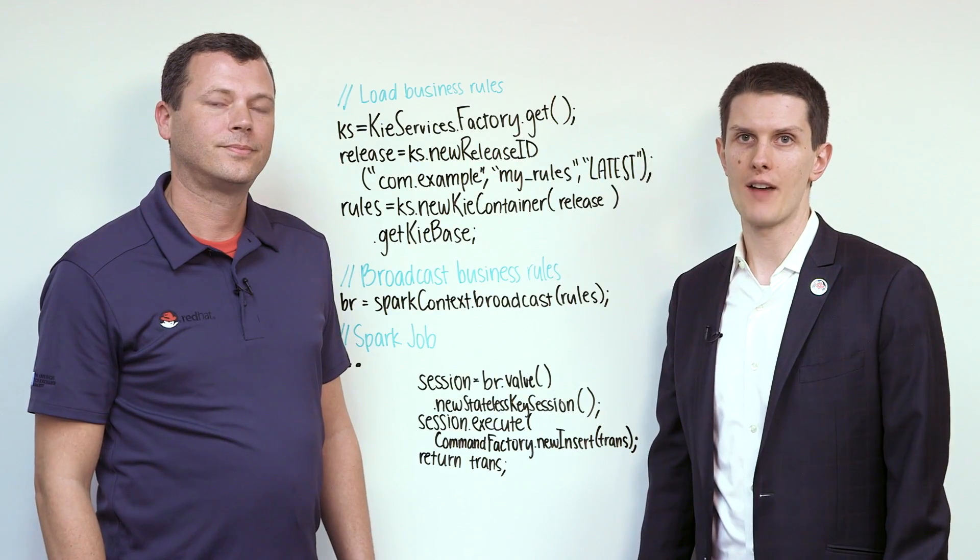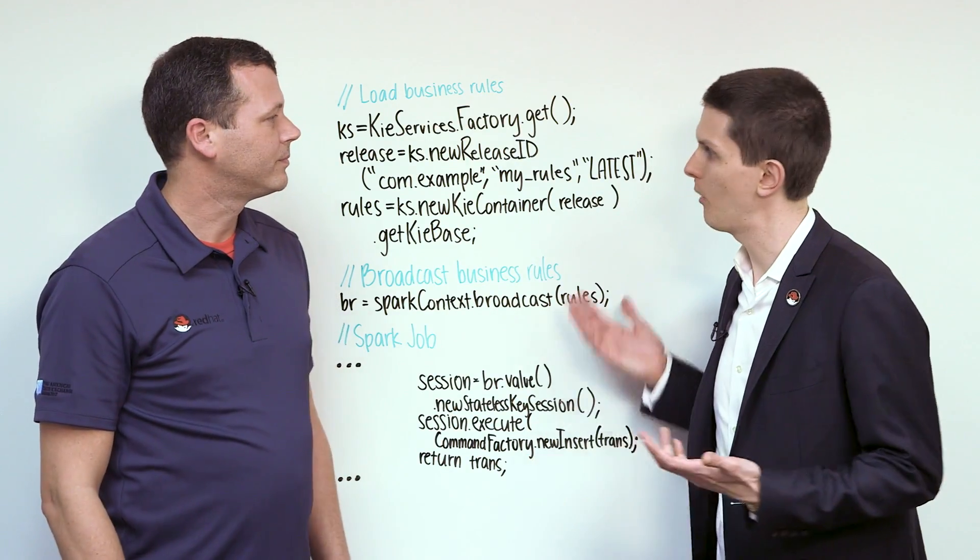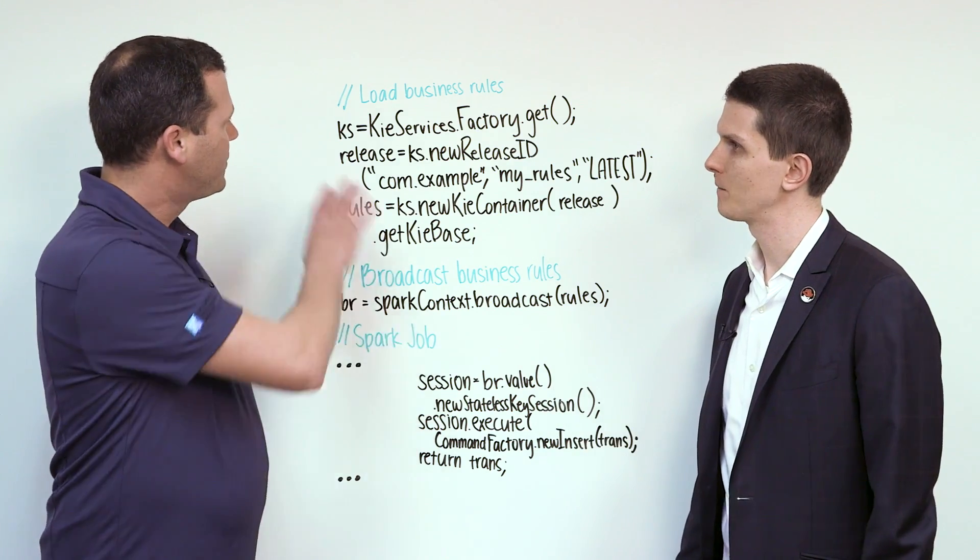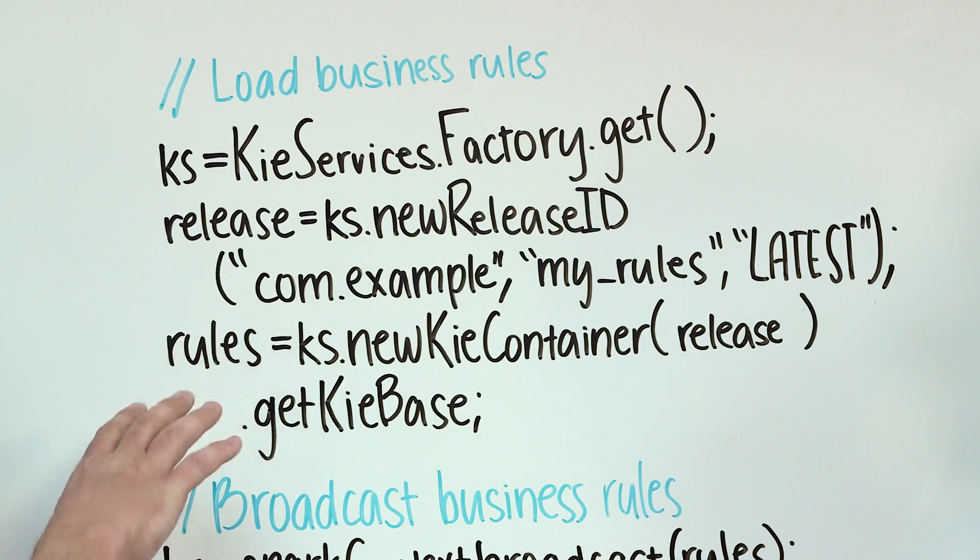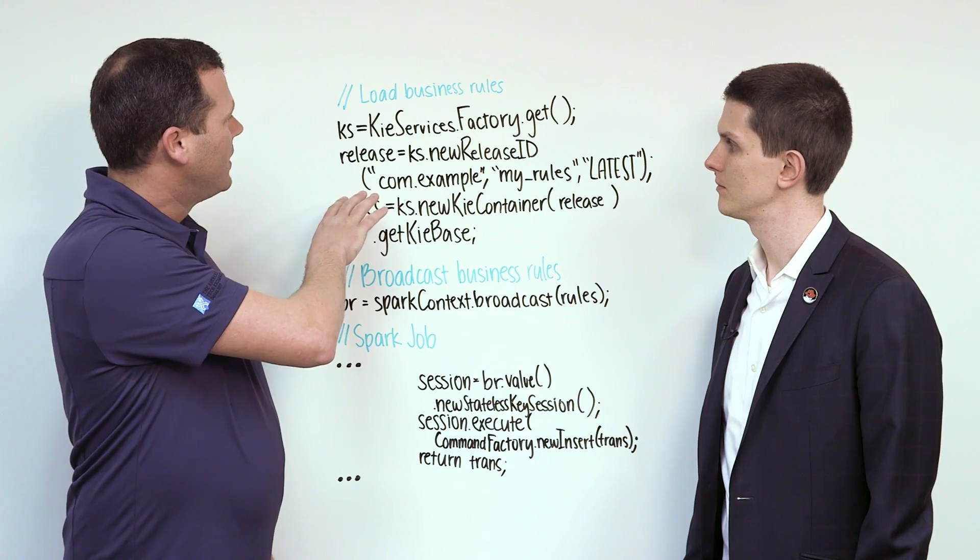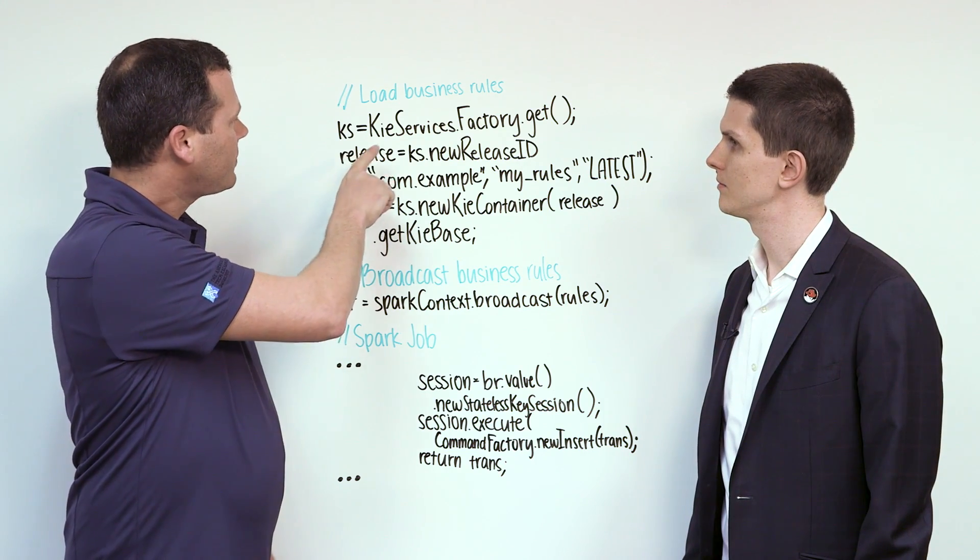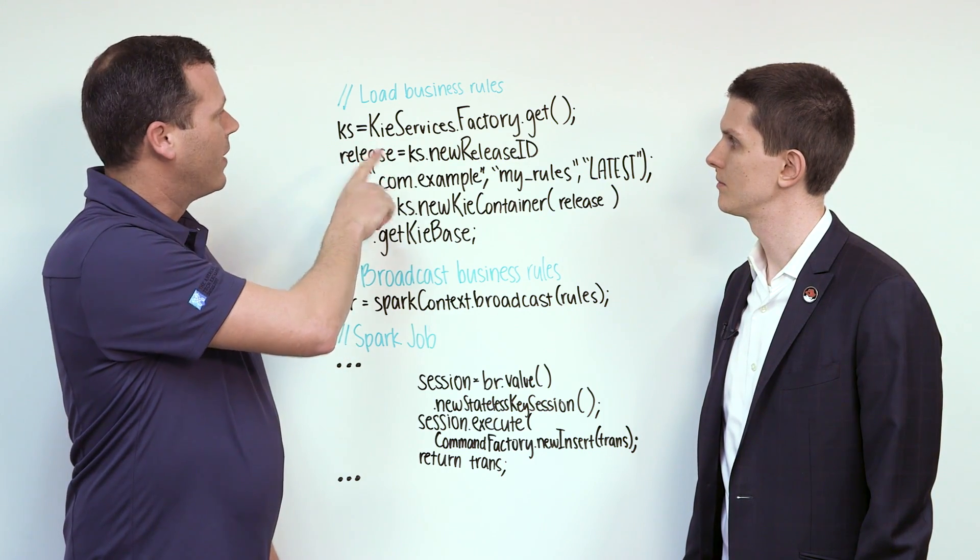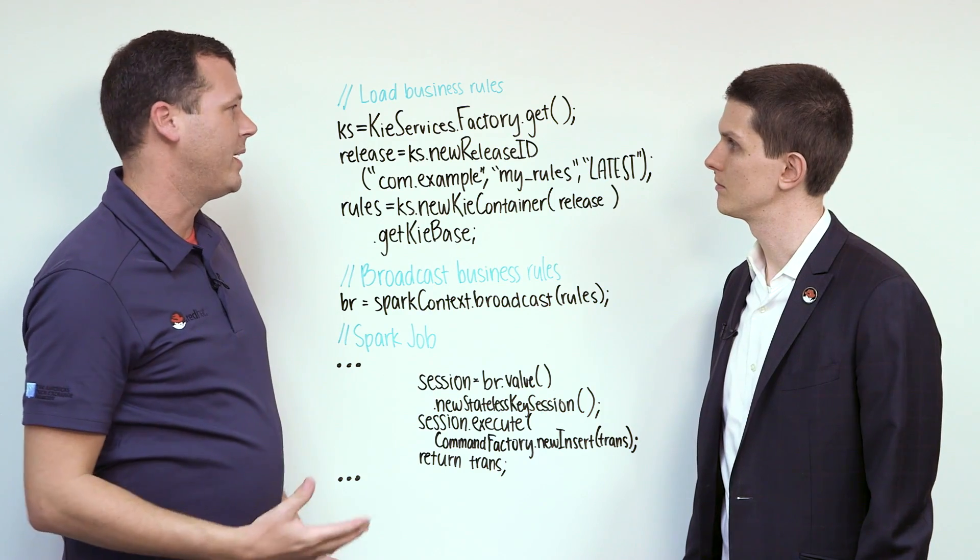Now that we have our Java pseudo code on the board, John, can you walk us through how it works? Yeah. So these few lines of code up here are where we're loading up the business rules. The first line is the key services that we're getting to actually use the key API.